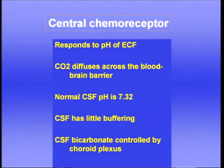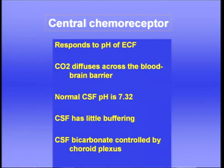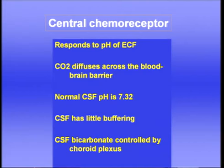To summarize the central chemoreceptor: it responds to the pH of the extracellular fluid, broadly that of the cerebrospinal fluid. The mechanism is that CO2 diffuses across the blood-brain barrier, changing the pH of the extracellular fluid or CSF. The normal pH of the CSF is about 7.32. It has little buffering power because of its low protein concentration, and the bicarbonate is controlled by the choroid plexus and can be altered if the pH of the CSF is changed over a long period of time.